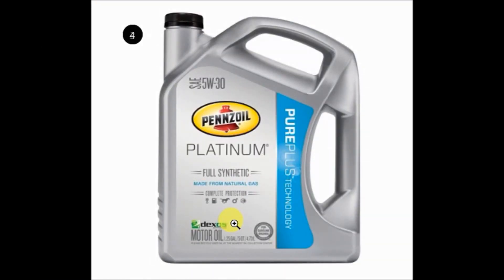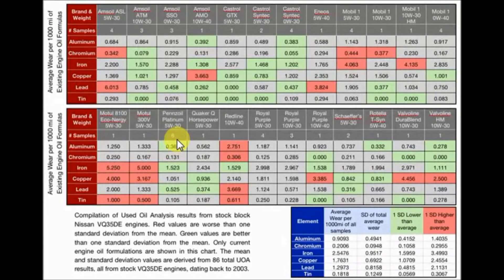Coming in fourth place was Pennzoil Platinum 5w30, a full synthetic which is made from natural gas. I was actually surprised when I was looking at this used oil analysis chart and saw where Pennzoil came in at. I never thought it would be so close to being at the top, but it came in fourth. Here's Pennzoil Platinum - it had three greens in it, which put it in the fourth position. Now coming up next, it was almost a tie between Castrol 5w30 synthetic and Pennzoil Platinum 5w30. You can go back and look at the results, but I'm putting Castrol as number three.